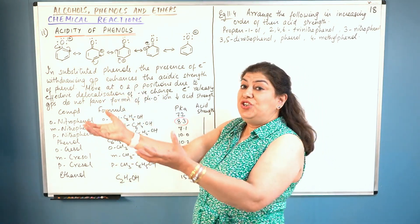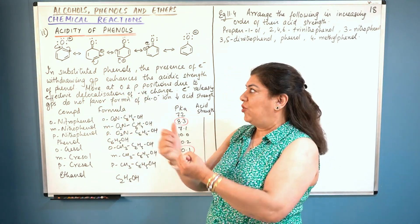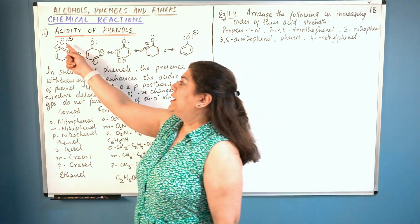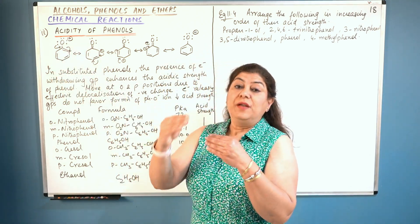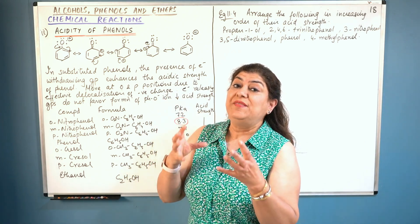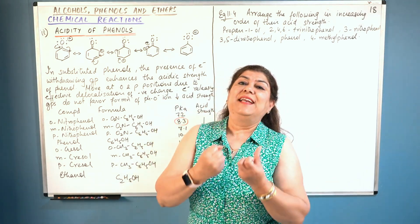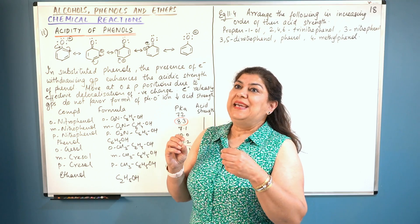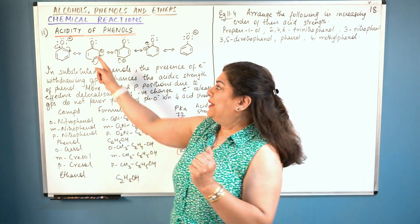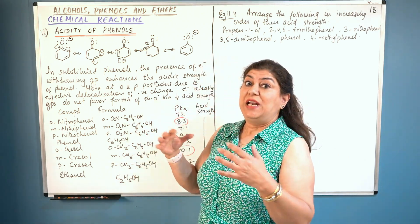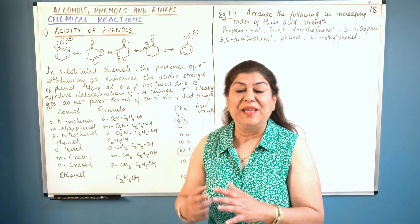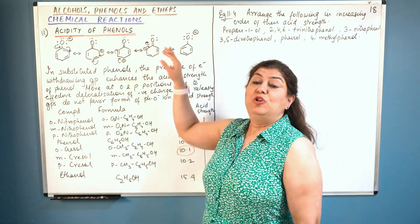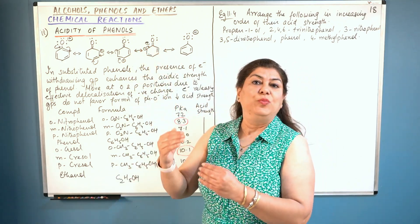Whenever you have an electron withdrawing group — a group that attracts electrons — even without a substituent, electrons do show resonance and move into the benzene ring because the ring itself is electron withdrawing. But if you have another electron withdrawing group in the benzene ring, that makes it even more electron withdrawing, which helps the electrons move into the ring. Therefore the phenoxide ion formed will also be more stable, so the acidic strength will increase.